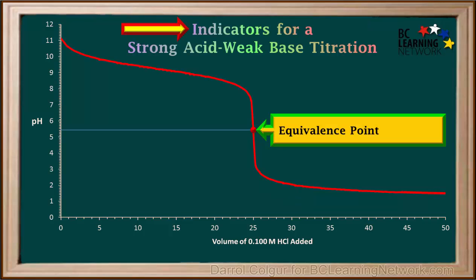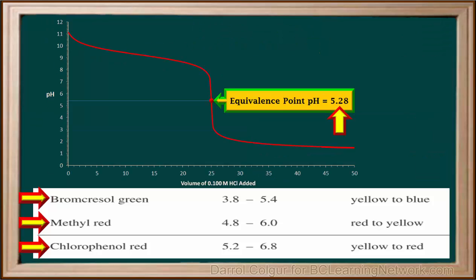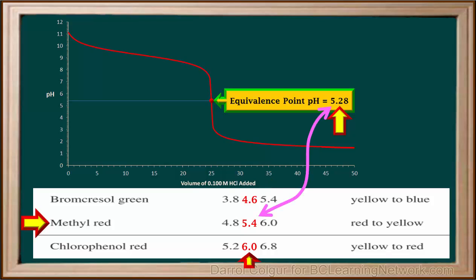Now we can use this graph to find the best indicators for this particular strong acid–weak base titration. The pH at the equivalence point is 5.28, so we look on the indicator table for any indicators that have 5.28 within their pH range of color change. We see that bromocresol green, methyl red, and chlorophenol red all have 5.28 within their pH range of color change. The pH at the transition point for each of these three indicators has been calculated. The pH at the transition point of methyl red, which is 5.4, is closest to the pH at the equivalence point of 5.28. So methyl red is the best indicator for this titration.